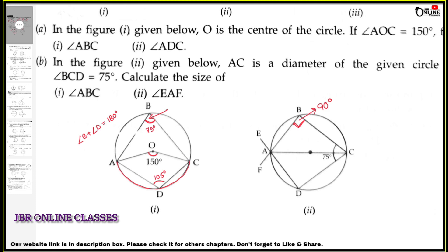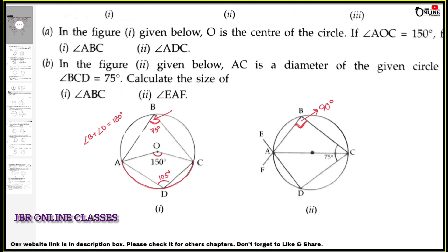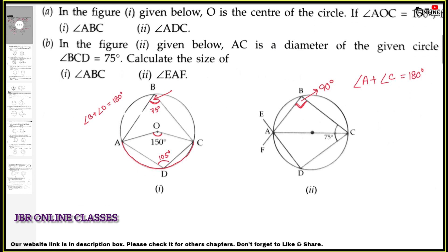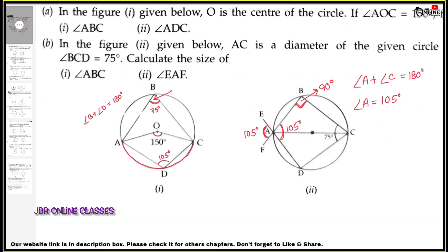Now I need to find angle EAF. Here A, B, C, D is a cyclic quadrilateral, so angle A plus angle C equals 180 degrees because they are opposite angles. Angle A equals 180 minus 75, which is 105 degrees. So angle BAD equals 105 degrees. Now angle EAF is the vertically opposite angle of angle BAD, so angle EAF also equals 105 degrees. Sum number 2 is done.